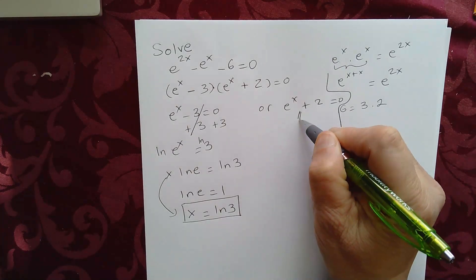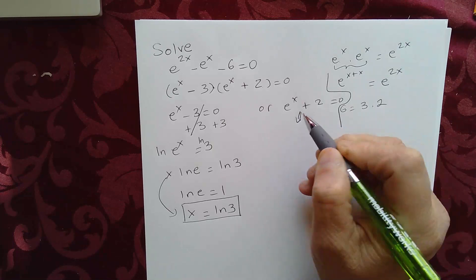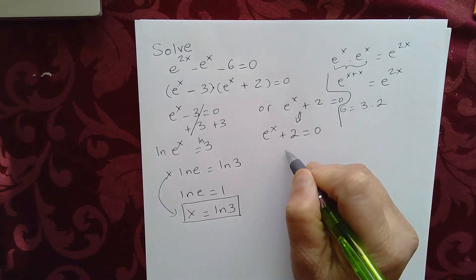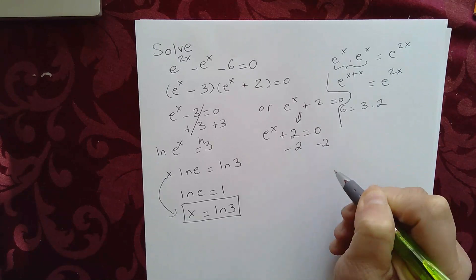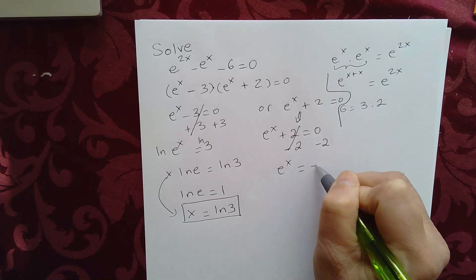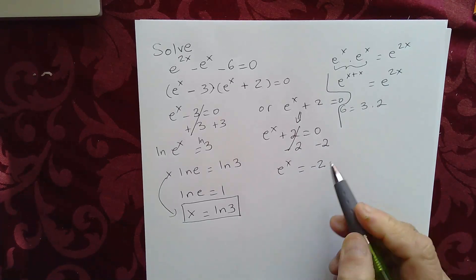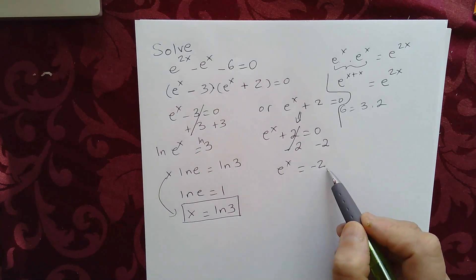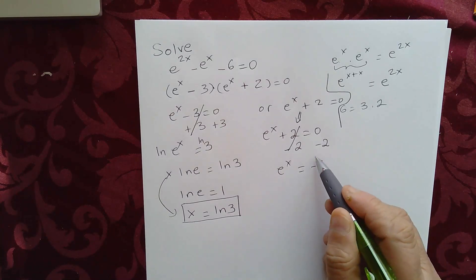Now let's try to solve this. e to the x plus 2 equal to 0. Now we have to subtract 2 on both sides, and this cancels. We get e to the x equal to negative 2. Now you have to reject the solution because e to the x cannot be negative. So you have to reject this.